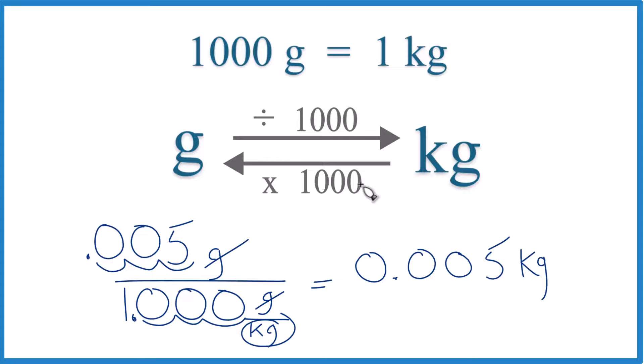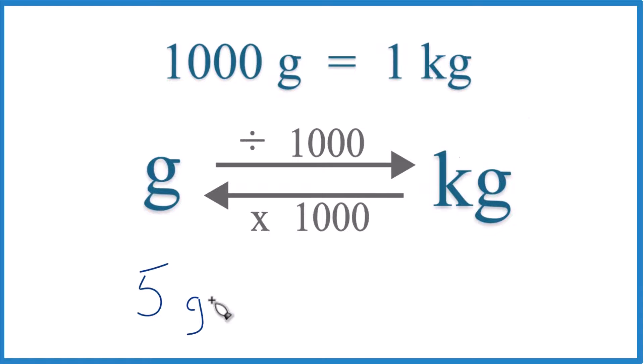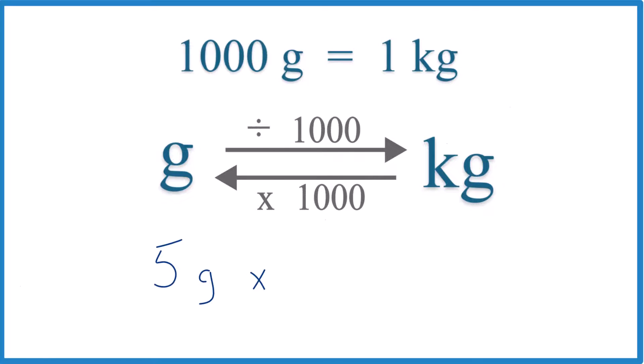Some teachers want you to multiply by a conversion factor. It's the same thing. Let me show you how to do it, though. So we have five grams. We have grams on top. We'll want grams to be on the bottom of our conversion factor. So we multiply by our conversion factor.